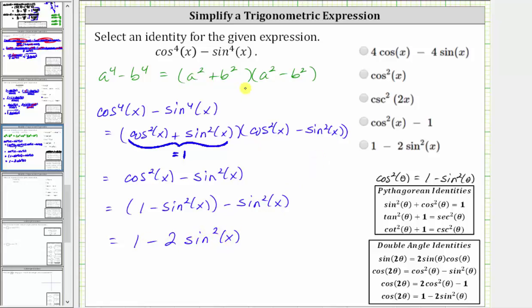Therefore, the given expression simplifies to 1 - 2sin^2(x), which is the last choice in our list, and we select 1 - 2sin^2(x). I hope you found this helpful.